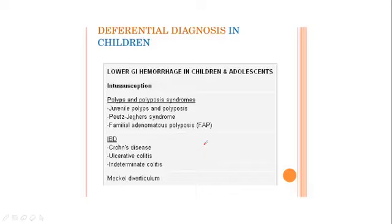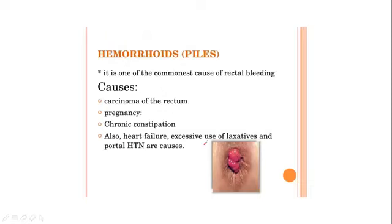Lower GI hemorrhage in children includes intussusception, polyps and polyposis syndromes, juvenile polyps, polyposis, diverticulitis, and Meckel's diverticulum. The causes of hemorrhoids include carcinoma, pregnancy, chronic constipation, heart failure, and excessive use of laxatives.